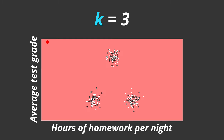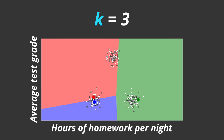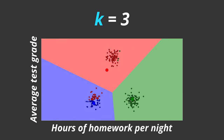At first the centroids will be randomly positioned, so they technically aren't even centroids. Then the algorithm assigns each data point to the closest centroid. Next, the centroids are recalculated for all the data points assigned to them. These two steps are repeated until there is no more change — the data points are assigned to the closest centroids, the centroids are recalculated, and this is repeated.